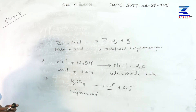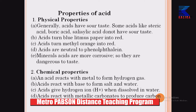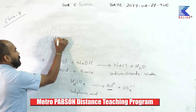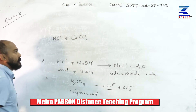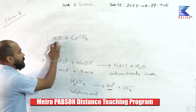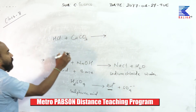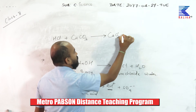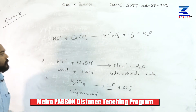The last chemical property is that acids react with metallic carbonates to form carbon dioxide gas. For example, acid HCl plus metallic carbonate calcium carbonate (CaCO₃) — when they react, they form calcium chloride, carbon dioxide, and water. Let us balance the chemical equation.